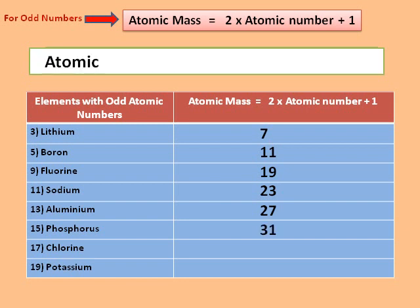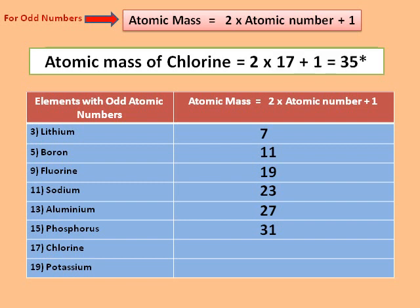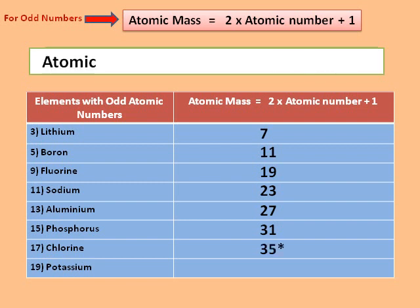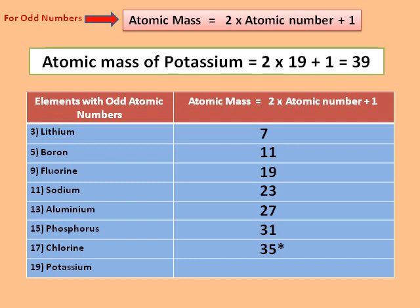Atomic mass of chlorine is equal to 2 × 17 + 1 = 35. And finally, atomic mass of potassium is equal to 2 × 19 + 1 = 39.